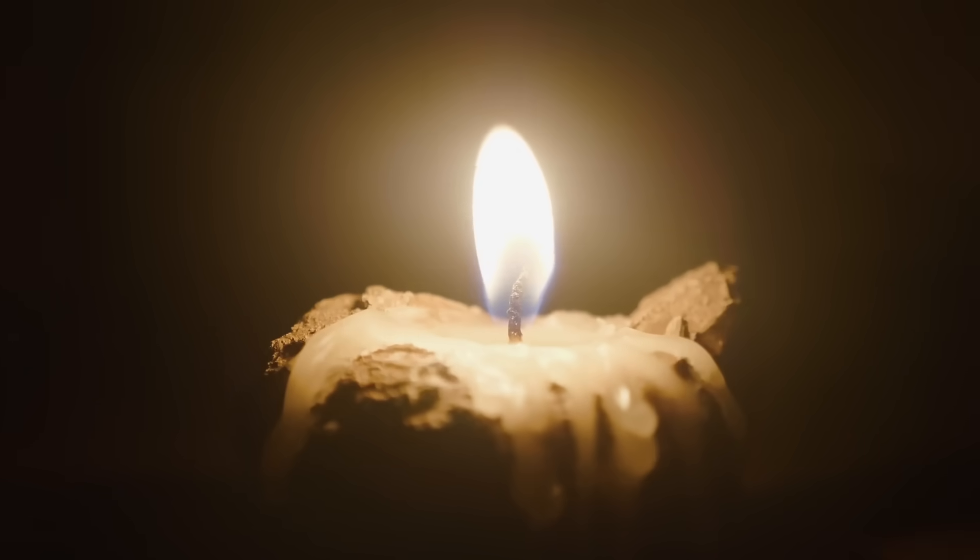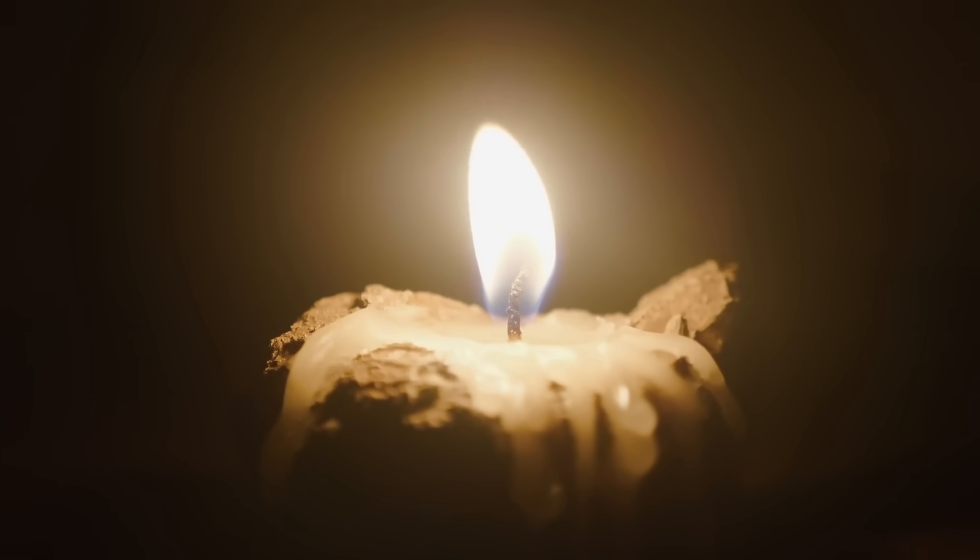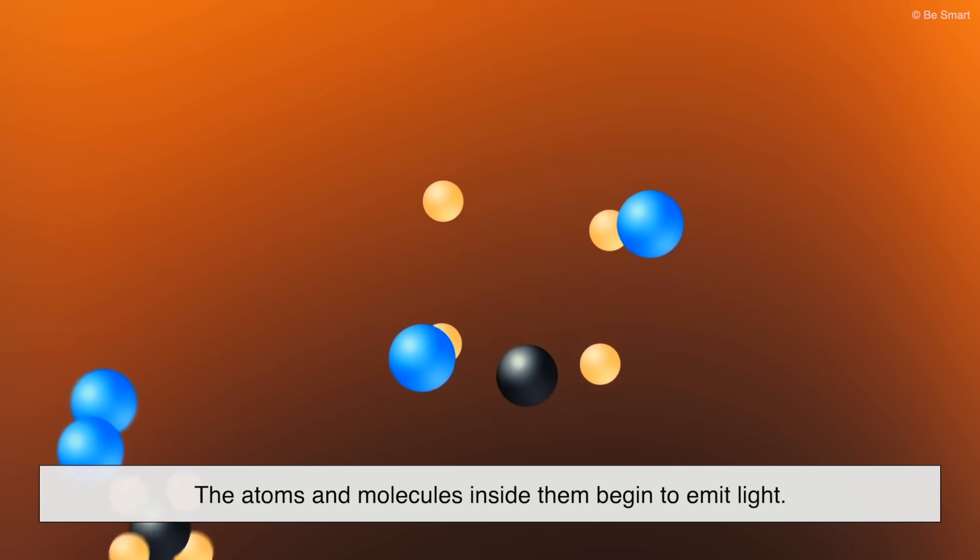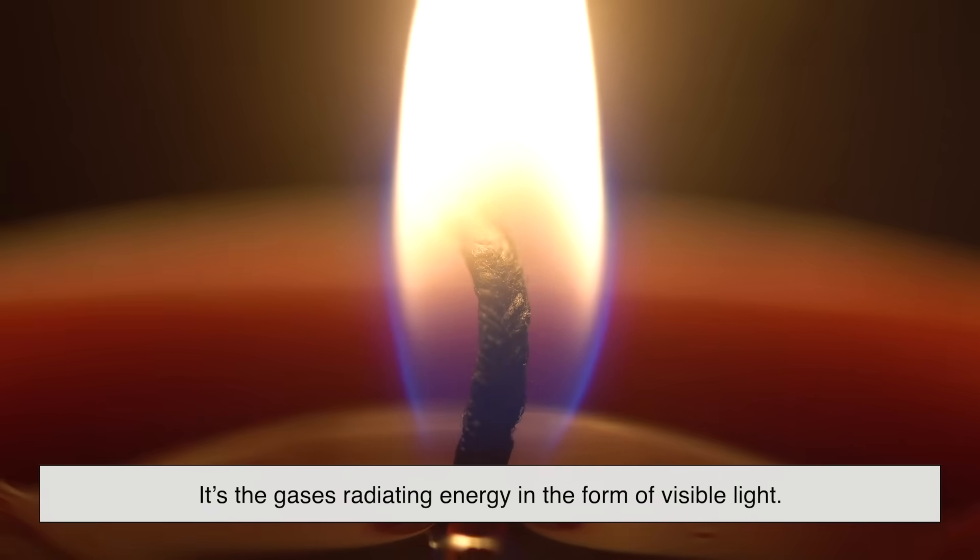So the flame itself is mostly made up of hot gases, but not just any gases. They're in an excited, energetic state. As these particles get super hot, the atoms and molecules inside them begin to emit light. The flame glows because of this. It's the gases radiating energy in the form of visible light.